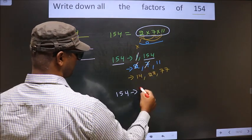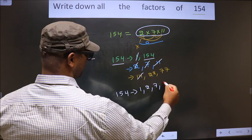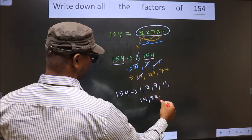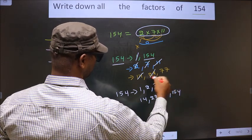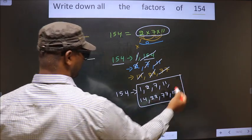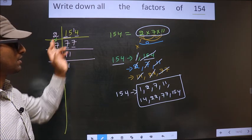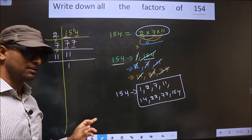That is, 1, 2, 7, 11, 14, 22, 77, 154. So, these are all the factors of 154. Am I clear?